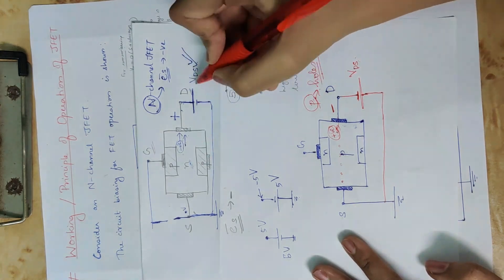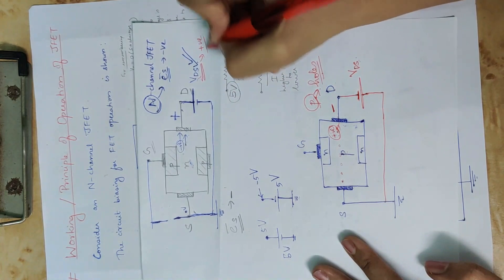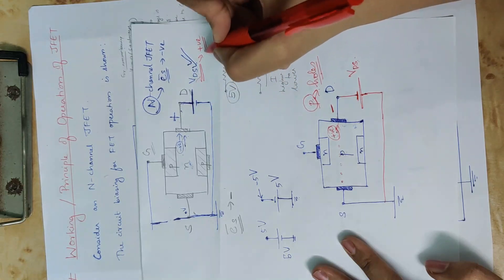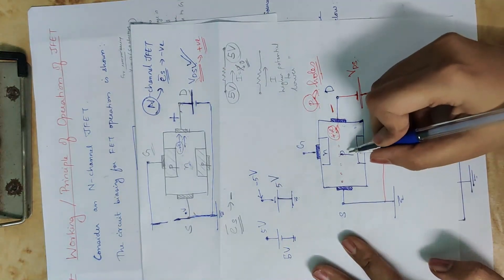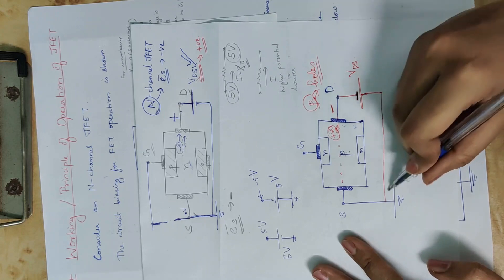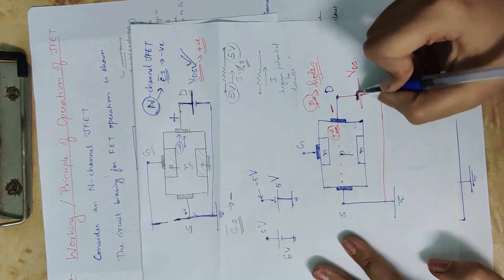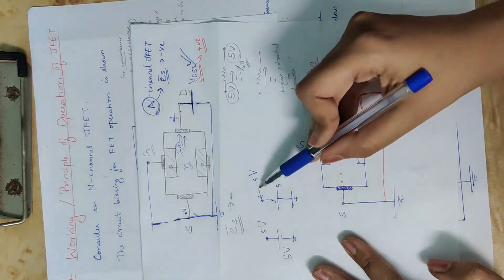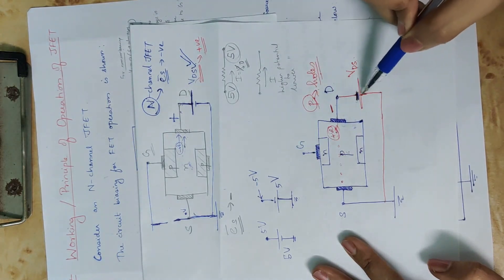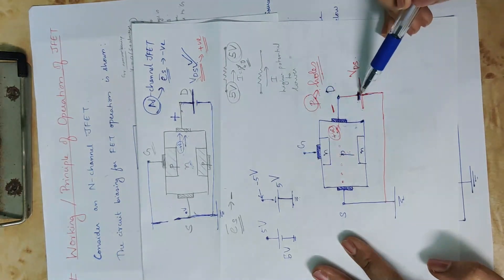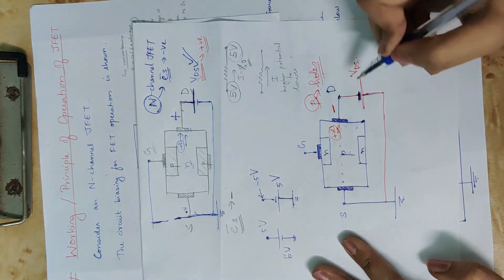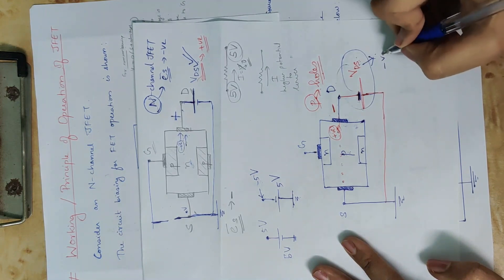If we connect VDS for the N-Channel JFET, the drain is positive. If we connect the P-Channel to the drain, we connect the negative polarity. If we connect positive to ground, the drain becomes negative, and the voltage VDS is negative for the P-Channel JFET. This is the same concept — the polarity is reversed.